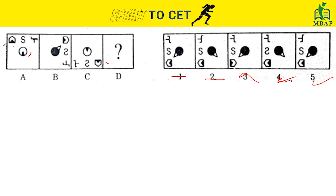Now looking at this circle: it moved 135 degrees anti-clockwise and changed its color — the light part went outside. So this element should also move 135 degrees anti-clockwise, placing the circle in a corresponding position with the inside part completely darkened and the outside lightened. This is happening in option one. In option two it is facing a different direction.